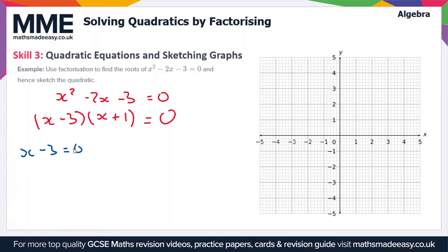So we could have x minus 3 equals 0 and therefore x equals 3. Or we could have x plus 1 equals 0 and therefore x equals minus 1. So these are our two solutions.